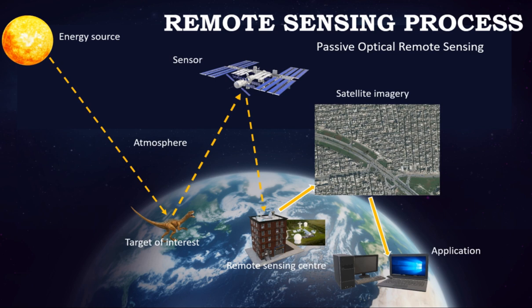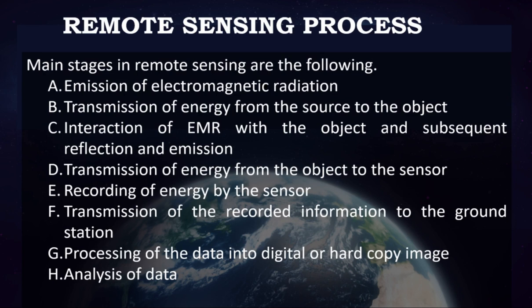These are the various stages in the remote sensing process. The main stages can be summarized as follows: emission of electromagnetic radiation; transmission of energy from the source to the object; interaction of electromagnetic radiation with the object and subsequent reflection and emission; transmission of energy from the object to the sensor; recording of energy by the sensor; transmission of the recorded information to the ground station; processing of the data into a digital or hard copy image; and finally, the analysis of data.